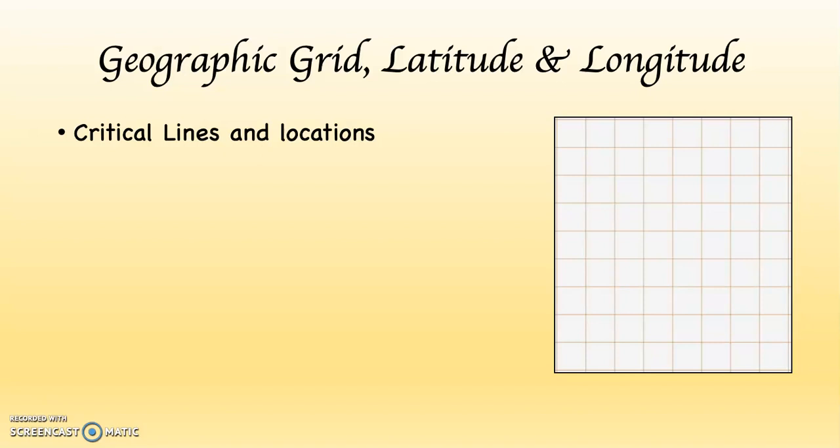Within the context of the geographic grid and latitude and longitude, there are some critical lines and locations. If you look at the right-hand side, you can see that that is a grid. In math, when you're using a grid or graphing something, you generally have two components: x and y. In this case, we're going to have latitude and longitude. Let's begin with latitude.